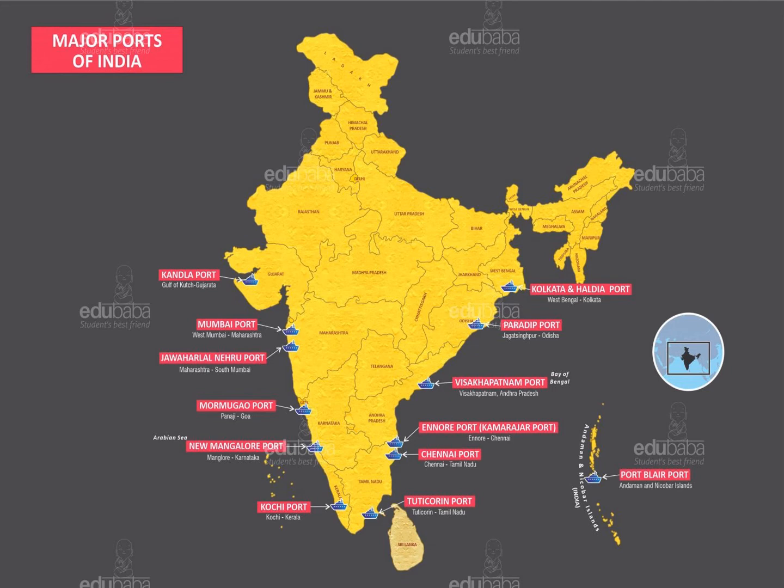In the state of Tamil Nadu, in the city of Tuticorin, we have Tuticorin port. Tamil Nadu consists of three ports — the second is located in Chennai, known as Chennai port, and the third is located in Ennore — Ennore port, also known as Kamarajar port. The next port is in Andhra Pradesh — Visakhapatnam port. In the state of Odisha, in the city of Jagatsipur, we have the port of Paradeep. In West Bengal, we have Kolkata and Haldia port. And last but not the least, in the Union Territory of Andaman and Nicobar Islands, we have Port Blair.